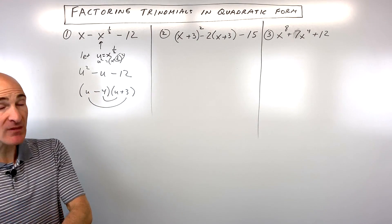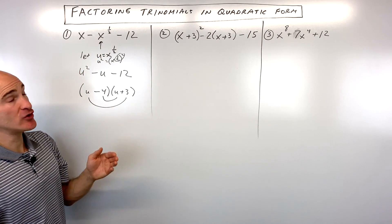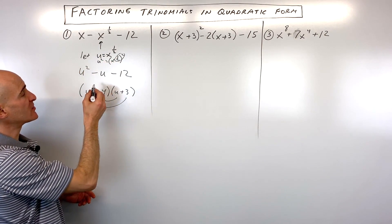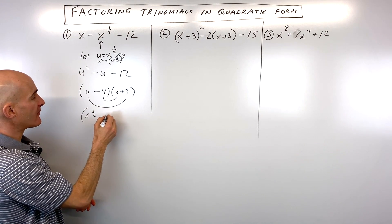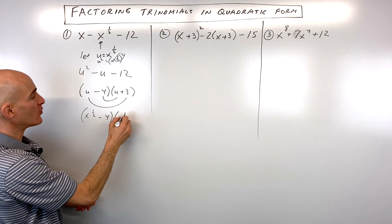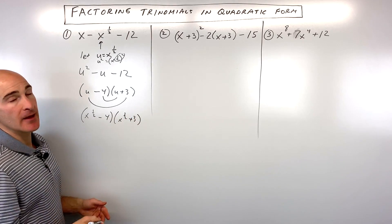Now at this point, since everything was in terms of x, not u, you can go back and say, u equals x to the one-half. Let me put that back in place of u. So x to the one-half minus four and x to the one-half plus three.